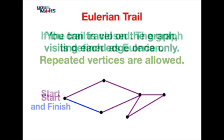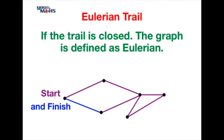In this case because the trail starts and finishes at the same vertex we say that it's a closed trail, and in the situation where we have a closed Eulerian Trail we define the graph as being Eulerian.